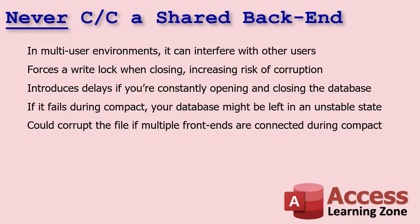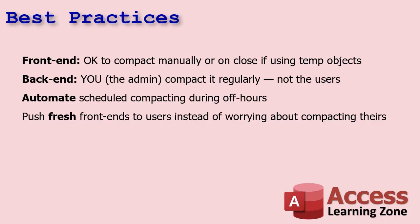What I used to do years ago was make a copy of the back-end database files, compact those, make sure they were backed up, delete the originals, and then replace them with the compacted copies — that made sure nobody was in it while I was compacting. Best practices: for the front-end, it's okay to compact manually or on close if you use a lot of temp objects. For the back-end, you — the admin — should compact it regularly. Weekly is fine for most cases; monthly if not. Don't trust your users to do that. You can automate scheduling compacting during off hours. And it's better to push updated front-ends to users on a regular basis rather than worrying about compacting their front-ends.